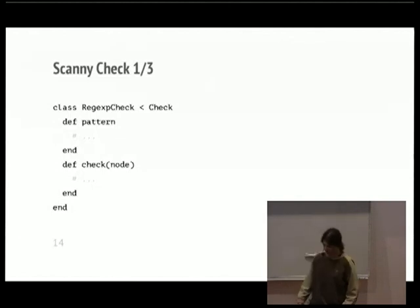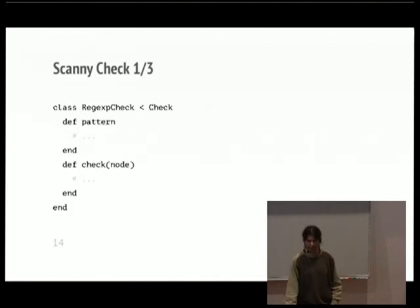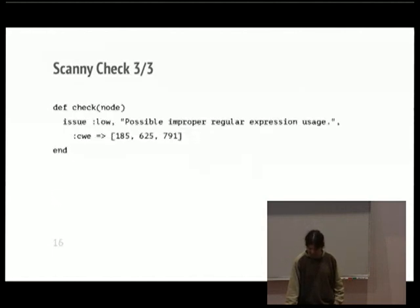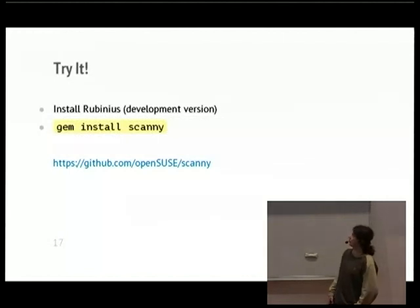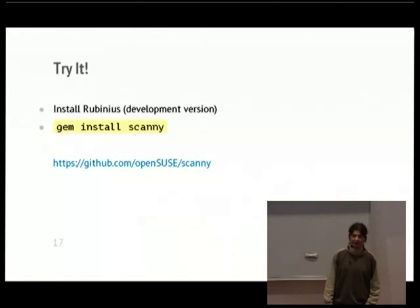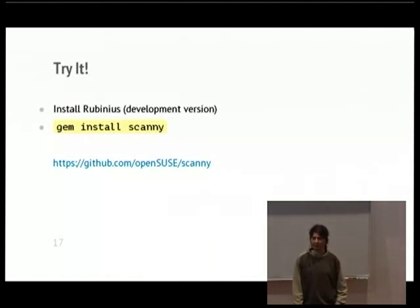I'll skip the section about creating checks in detail. Briefly, if you want to create a new check, you create a class with just two methods: one that contains the Machete pattern which searches for the nodes you're interested in, and another that gets those interesting nodes and raises issues or does additional examination. A simple check is something like 20 lines of code. If you want to try Scanny, first you need to install Rubinius — as I said, it uses the Rubinius parser. Then you can install Scanny as a gem like any other Ruby-based program. And of course you can check out the newest code on GitHub in the OpenSUSE repositories.